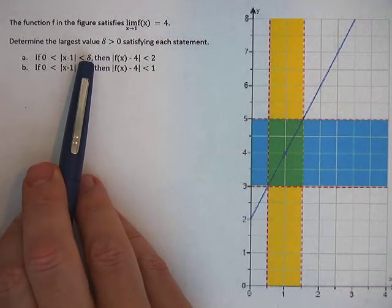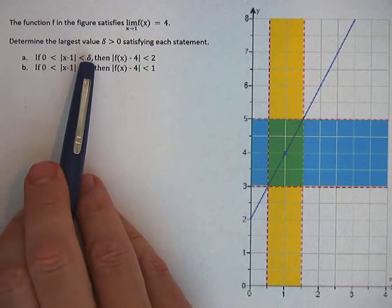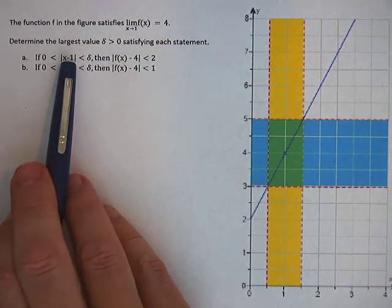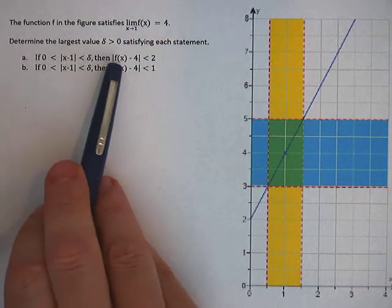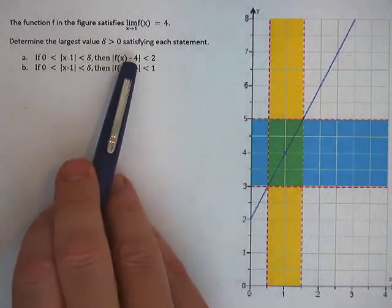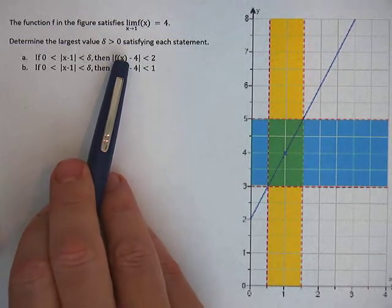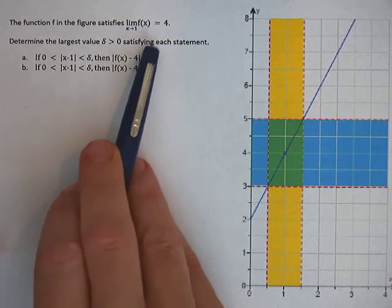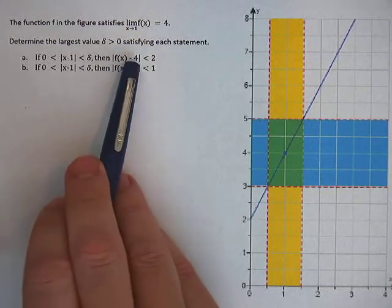So what does the delta need to be, or how close does x need to be to 1 in order for this statement to be true, in order for the function minus 4, which is the limit, to be less than 2.